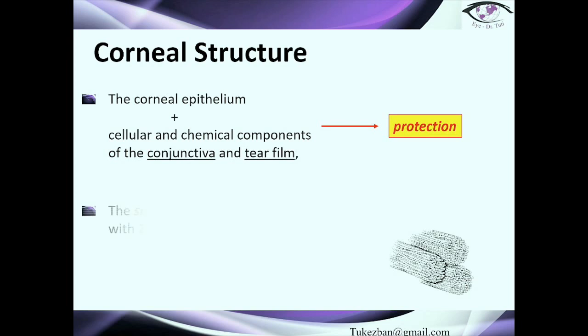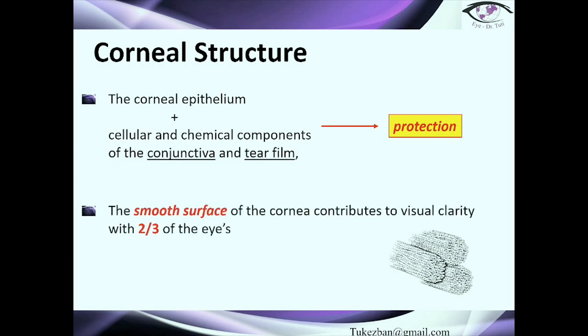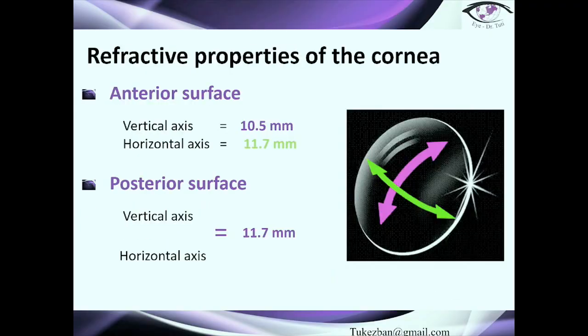The corneal epithelium and cellular and chemical components of the conjunctiva and tear film provide protection of the cornea. The cornea also has a smooth surface which contributes to visual acuity, and with two-thirds of the refractive power of the eye it provides the refractive ability. Regarding refractive properties, from both the anterior and posterior surfaces we need to know the vertical and horizontal measurements. The anterior surface has different vertical and horizontal measurements, whereas the posterior surface has the same measurement vertically and horizontally.